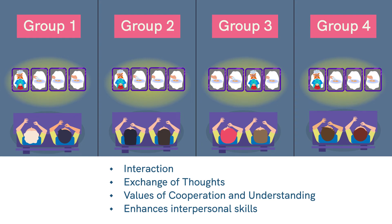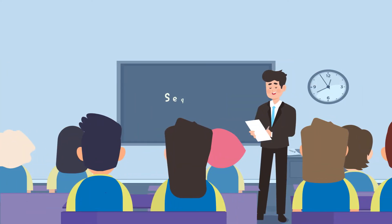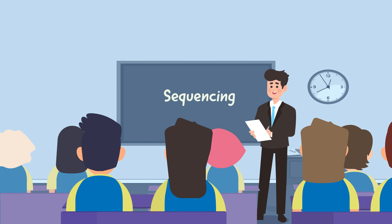Once the students are done with the arrangements, ask them to announce their sequence. If some picture cards are misplaced, help them to fit the cards in the correct arrangement. Write the word 'sequencing' on the blackboard. That was fun, wasn't it? Now in the next session let's help the students to write a report. Till then, goodbye.